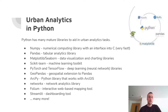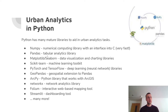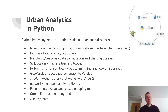Let's look at some of these libraries. NumPy is a numerical computing library with an interface into C — it's very fast and allows you to perform vector and array-based computations. Most of the libraries below build on top of NumPy. Pandas is a tabular analytics library similar to Excel spreadsheets, but with the full power of Python's ecosystem. Matplotlib and Seaborn are data visualization libraries. Scikit-learn is a generic machine learning toolkit allowing classification, regression, clustering, and all sorts of machine learning tasks. PyTorch and TensorFlow are the go-to libraries for deep learning.